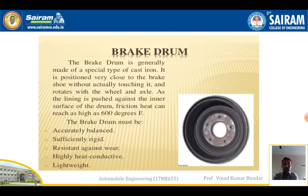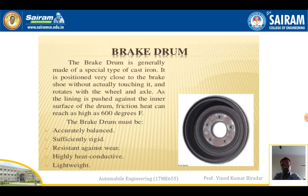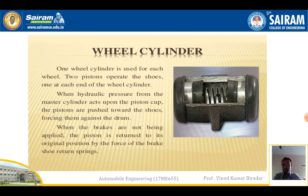The second part is the brake drum. The brake drum is normally made of a special cast iron and its position is very close to the brake shoe. It is fixed around the tire — if you observe the diagram, the brake drum is fitted inside, around which the tire is fitted. The drum must have accurate balance, be sufficiently rigid, tight, resistant to wear, have high heat conductivity, and a very low weight.